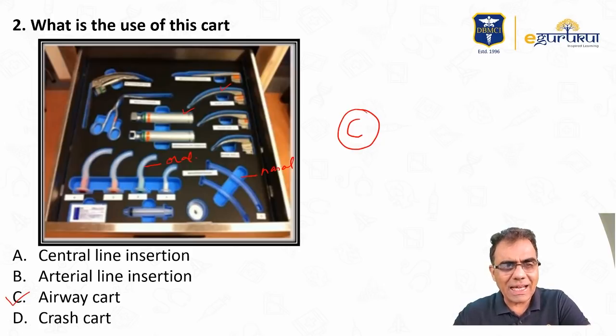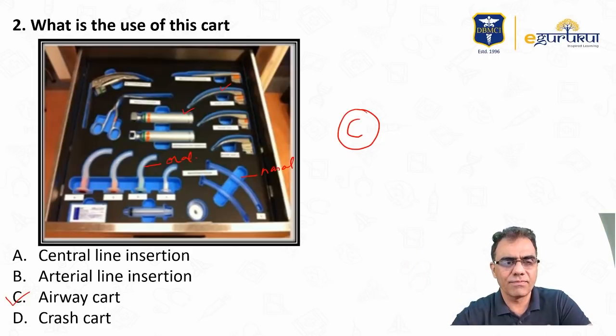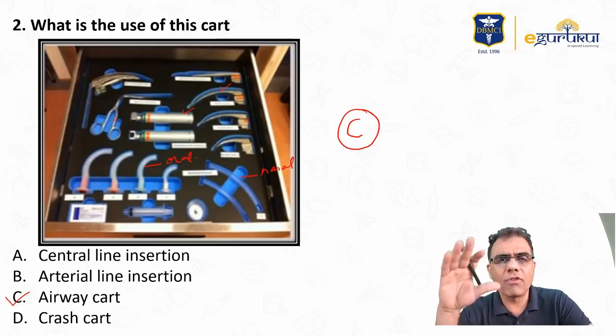Crash cart - in crash cart, in addition to these airway equipments, there will be endotracheal tubes kept in a box, then there will be all medicines, drugs, IV set, everything. Crash cart is a trolley having at least four or five different rows. So this is airway management set.